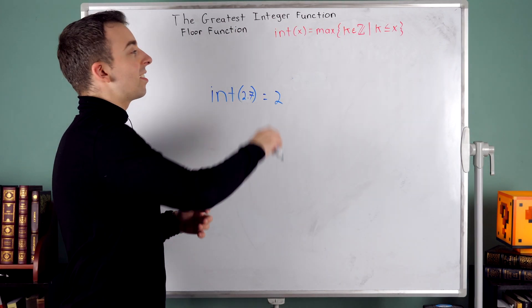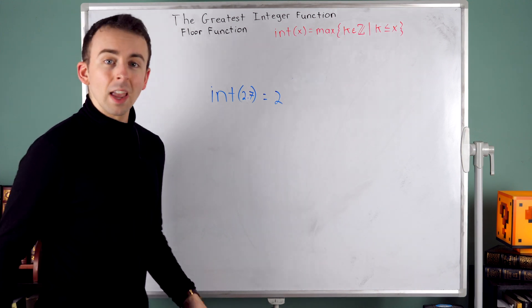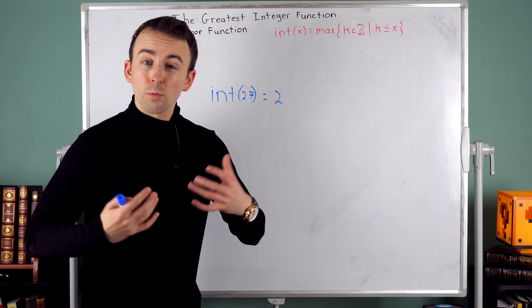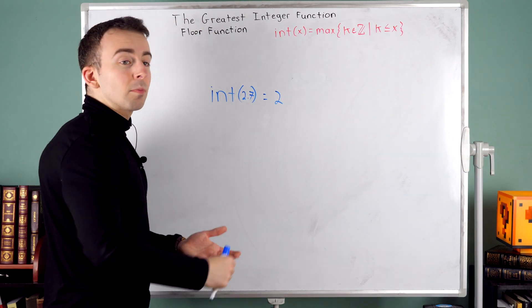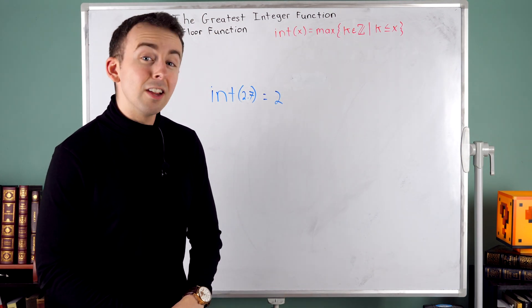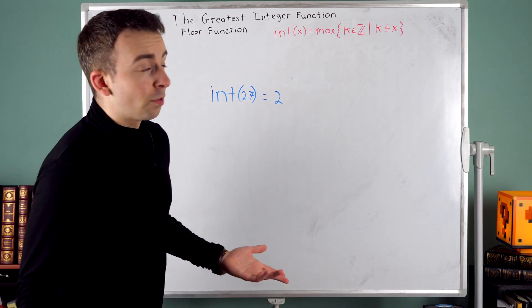This is called the greatest integer function or sometimes the floor function. And if you want a slightly more rigorous definition of how it works, here it is right there. Don't worry about it if you don't understand what that notation means, you'll be able to understand what the function does just fine.